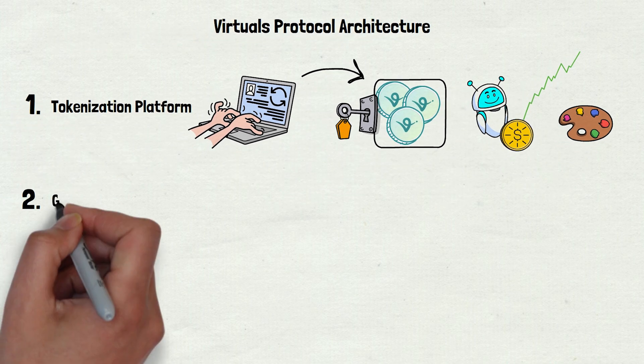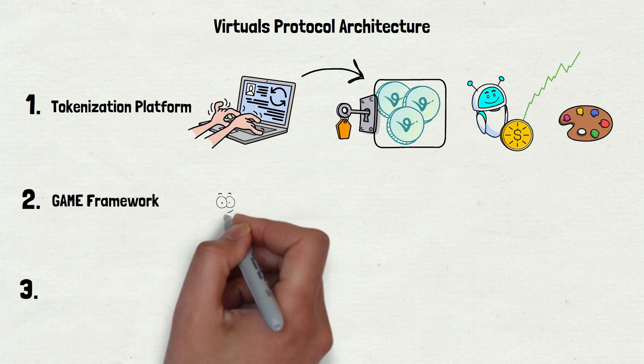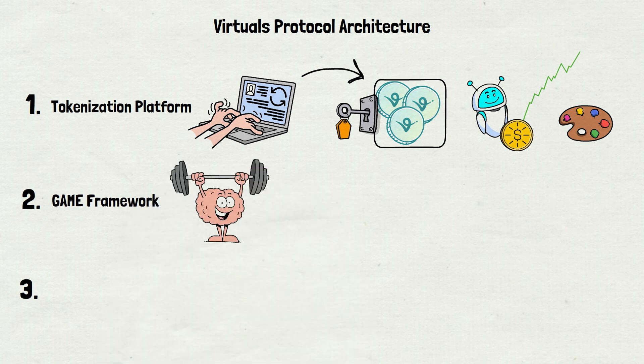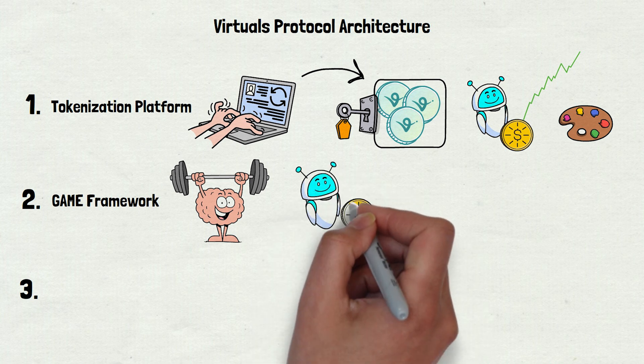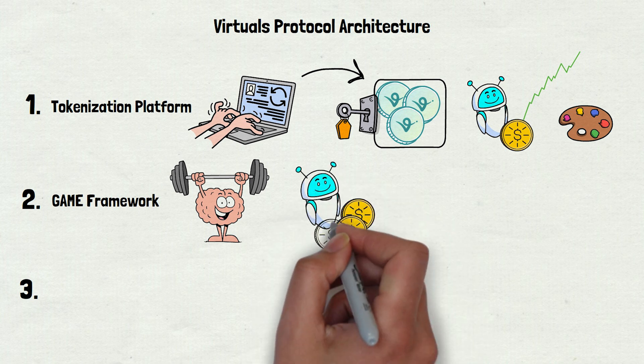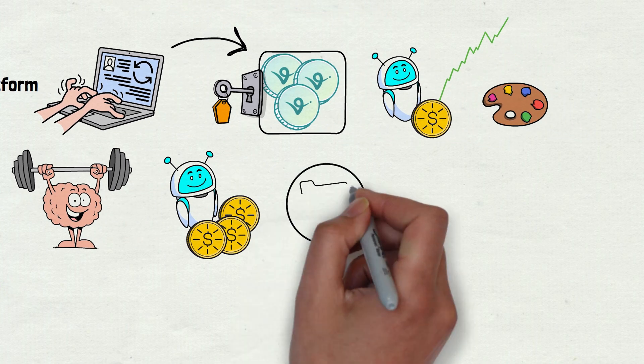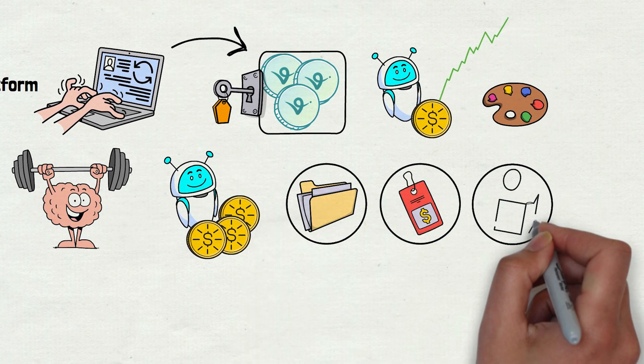Second, there is the game framework. This is the brain of the AI agents. It helps them decide what to do based on their goals. Say an agent's goal is to earn more tokens. The game framework lets it pick tasks, set prices, and learn from what works, all on its own.